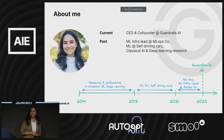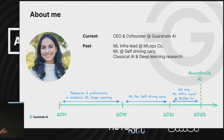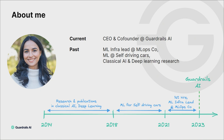Before we get started, a little bit about me. As I mentioned, I'm currently at Guardrails AI. In the past, I've spent about a decade or so working in machine learning. Previously, I was the machine learning infrastructure lead at Predibase, which is a machine learning infrastructure company. I spent a number of years in the self-driving car space, working across the stack of self-driving, and before that did research in classical AI and deep learning.